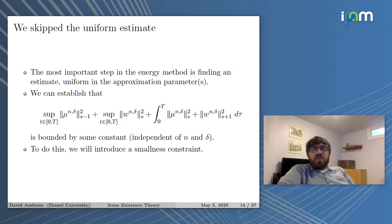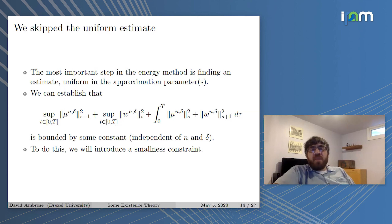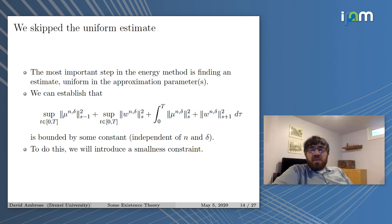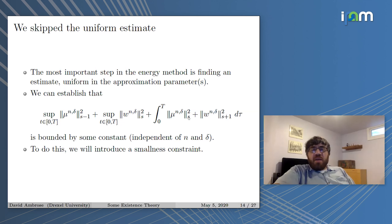The parts of the energy method I showed so far are routine. The heart of the energy method is always the uniform estimate. We want to establish a bound independent of the approximation parameters N and delta for the norm quantity described.